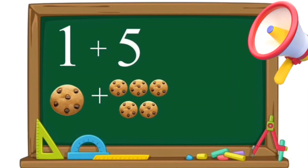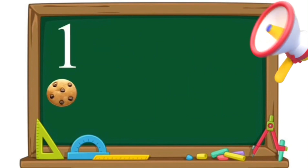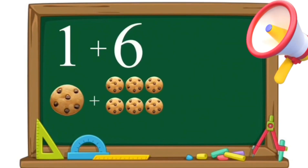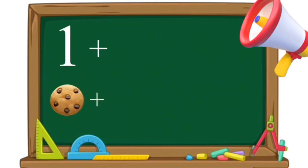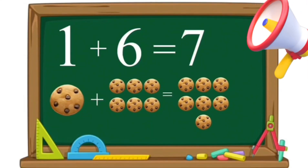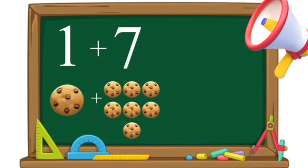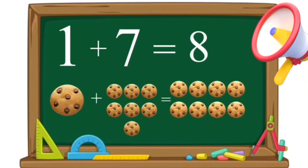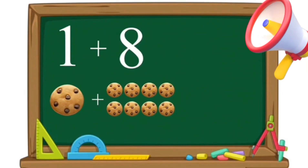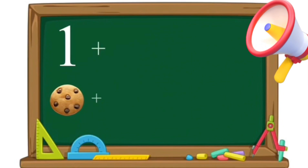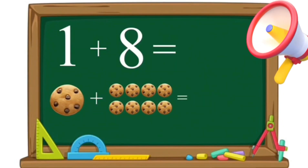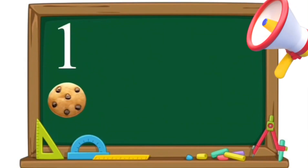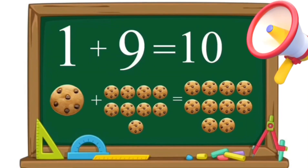One plus five equals six. One cookie plus five cookies equals six cookies. One plus six equals seven. One cookie plus six cookies equals seven cookies. One plus seven equals eight. One cookie plus seven cookies equals eight cookies. One plus eight equals nine. One cookie plus eight cookies equals nine cookies. One plus nine equals ten. One cookie plus nine cookies equals ten cookies.